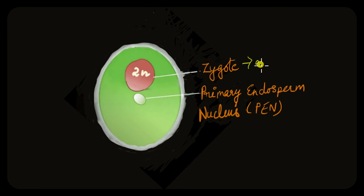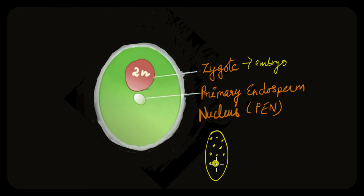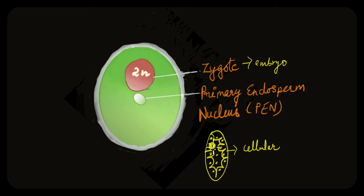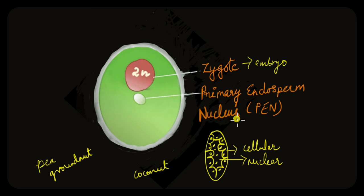Notice how nuclear division is not immediately followed by cellular division. Once enough nuclei have been formed, the nuclei pushed to the periphery begin to undergo cell wall formation. This part of the endosperm is called cellular endosperm, while the nuclei inside not covered by cell wall are called nuclear endosperm. In plants like peas and groundnut, this endosperm is completely consumed as the embryo develops. But in cases like coconut, the endosperm is persistent — the white kernel is the cellular endosperm and the coconut water is the nuclear endosperm. The endosperm is also persistent in wheat and maize.